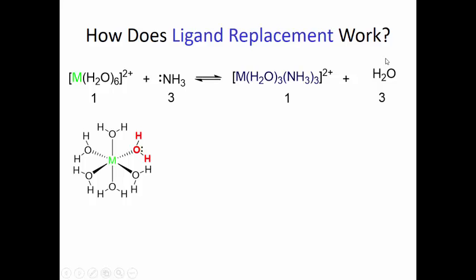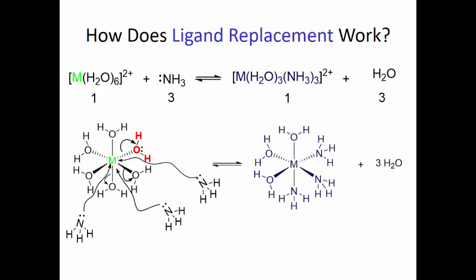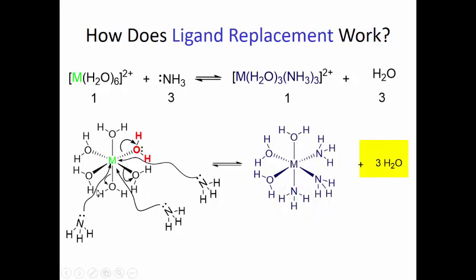Here's my hydrate. One ammonia comes in, attacks the metal, and kicks off the water. Then a second ammonia comes in, attacking the metal and causing another water out. And then the third ammonia also attacks the metal and forces out water. On the other side of the arrow, you have a nice dark blue complex — now you have three ammonias attached to that metal, with only three waters remaining and three water molecules lost.